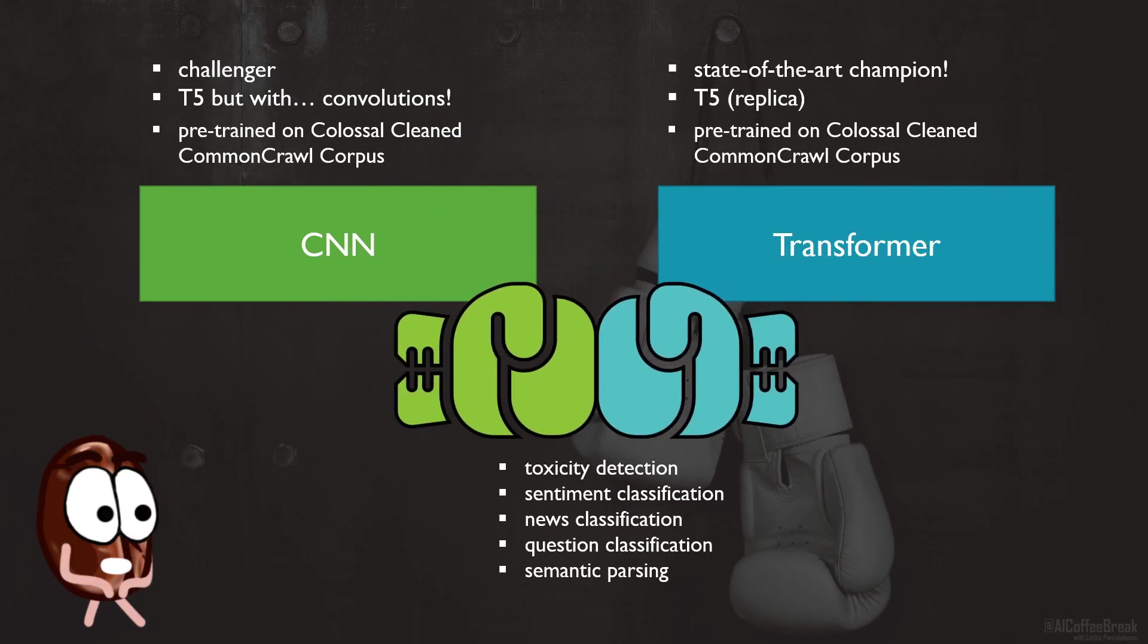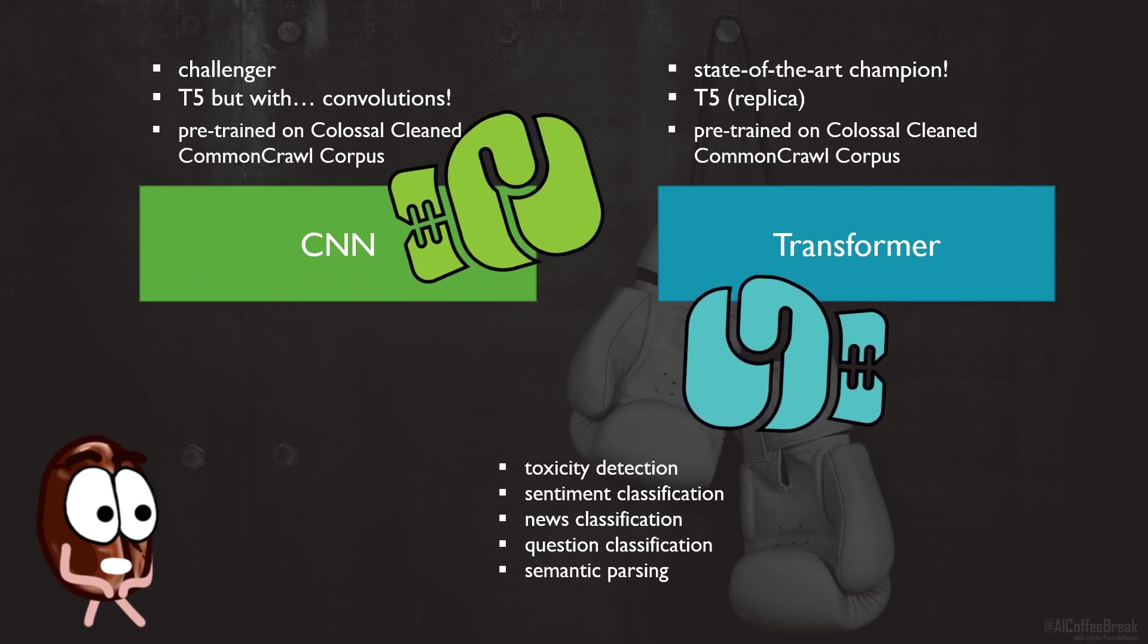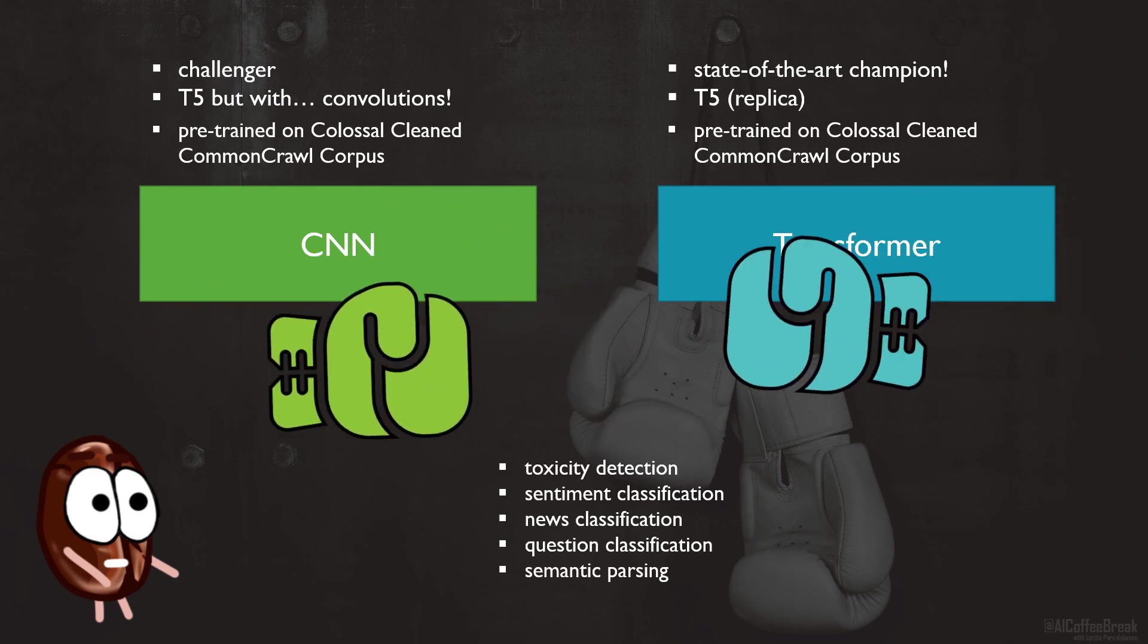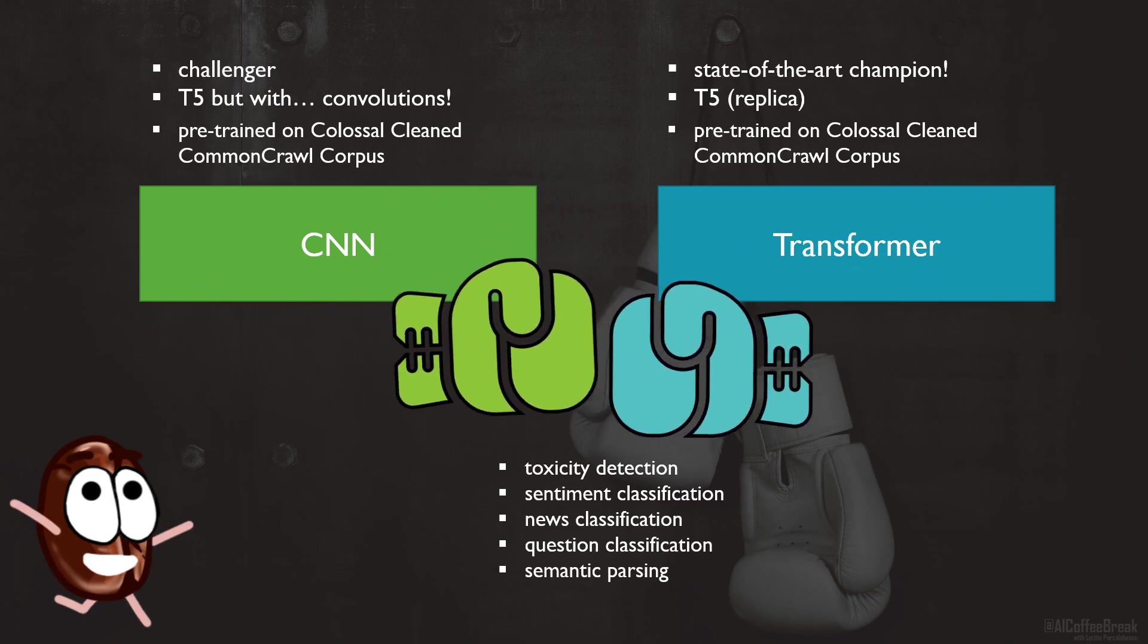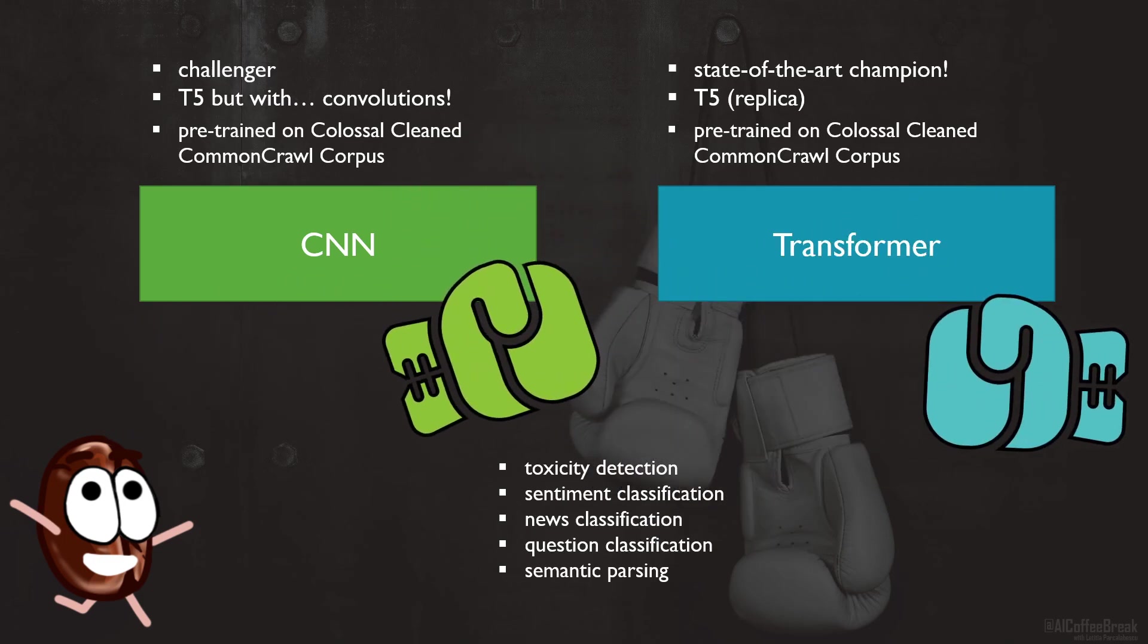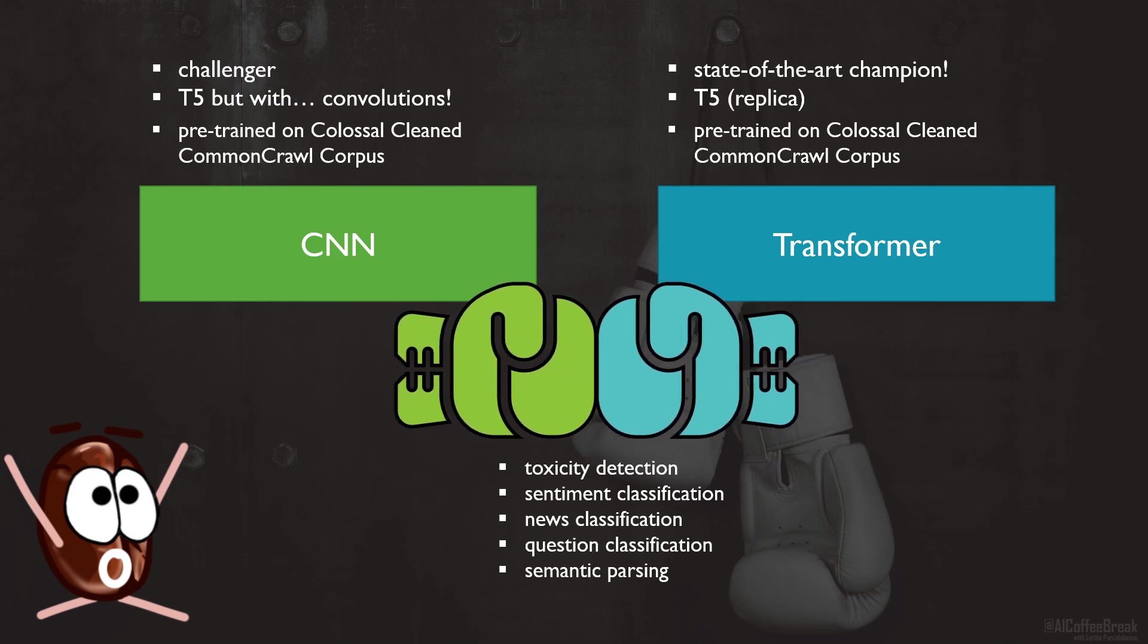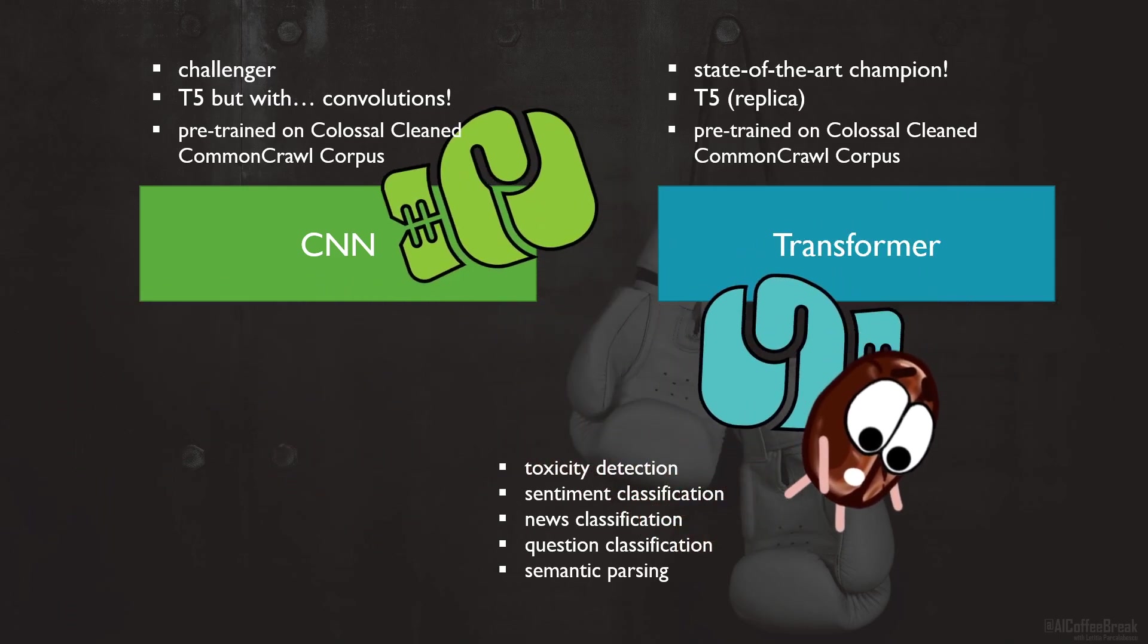The authors highlight that convolutions are not the best choice in tasks that need cross-attention between two or more sequences, like natural language inference where you must predict the relation between two sentences. On the bright side, experiments confirm that convolutions are faster—the scaling is linear in sequence length—and CNNs are in general more efficient in the number of floating-point operations than transformers.